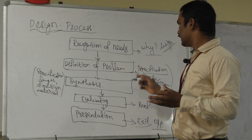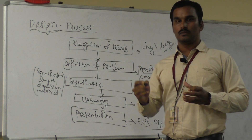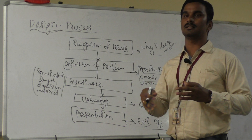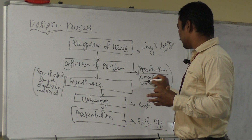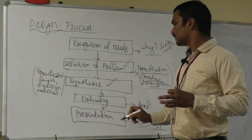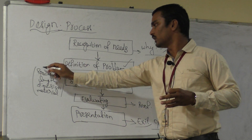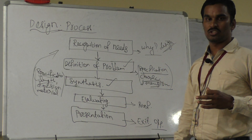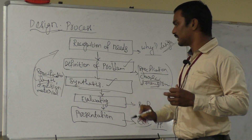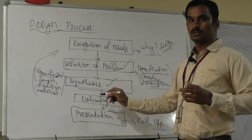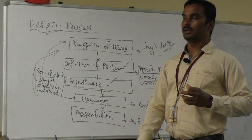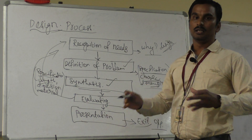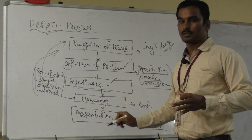Window AC to split AC — similarly, in automobiles and two-wheelers, before 30 years we were not using a gearbox, but now we are using a gearbox because of speed. So the design process involves: definition of the problem with specifications, then synthesis — ordering the problems, which one is the biggest problem — and then we design the recognition of needs. Then we evaluate: is this correct or not? If not, go back to recognition of needs, review the definition of problems, then synthesis, then evaluate. Finally, we present the part. This is a very important process in design.